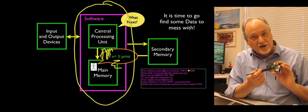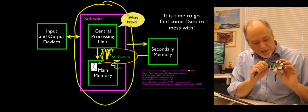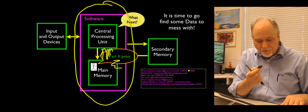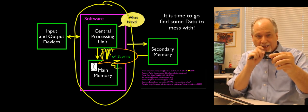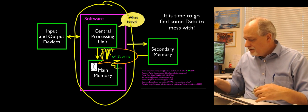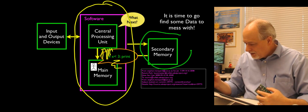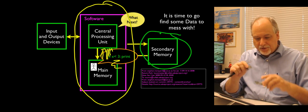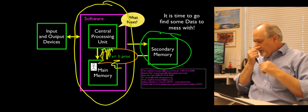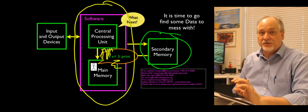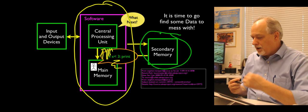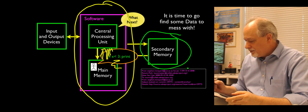All your programs were in RAM, your CPU is in there, and that's pretty much how far you got. But now, when you save your files, you save them to disk. We are going to start looking at data on the disk drive — it's time to escape to secondary memory. So it's time to find some data to mess with.